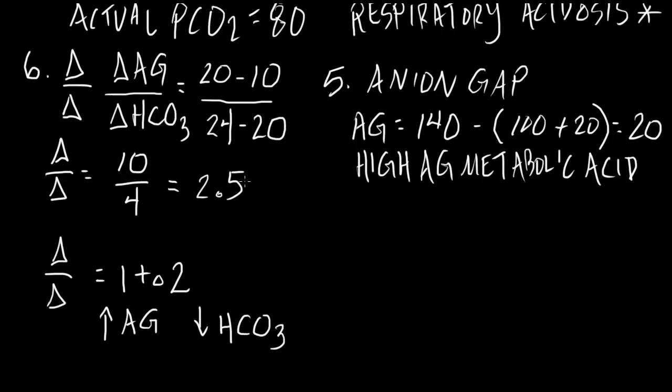What this tells me is that the patient's bicarb of 20 is much higher than it should be. For this delta-delta ratio to be between 1 and 2, this bicarb has to be lower. So, this bicarb is higher than it should be. What situation do we have where we have bicarb that's higher than normal? Bicarb that's higher than normal is a metabolic alkalosis.